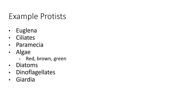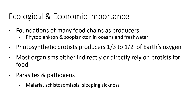You don't have to remember the examples of protists — what I'm trying to point out is that there's a very large variety. They do have a big economic and ecological impact. They're the foundations of lots of food chains, especially the producers — the phytoplankton — and then the zooplankton often eat the phytoplankton. They're very important in all the oceans and in freshwater environments. In fact, some people estimate that the photosynthetic protists produce as much as a third to a half of all of Earth's oxygen. So most organisms are either indirectly or directly relying on protists for food.